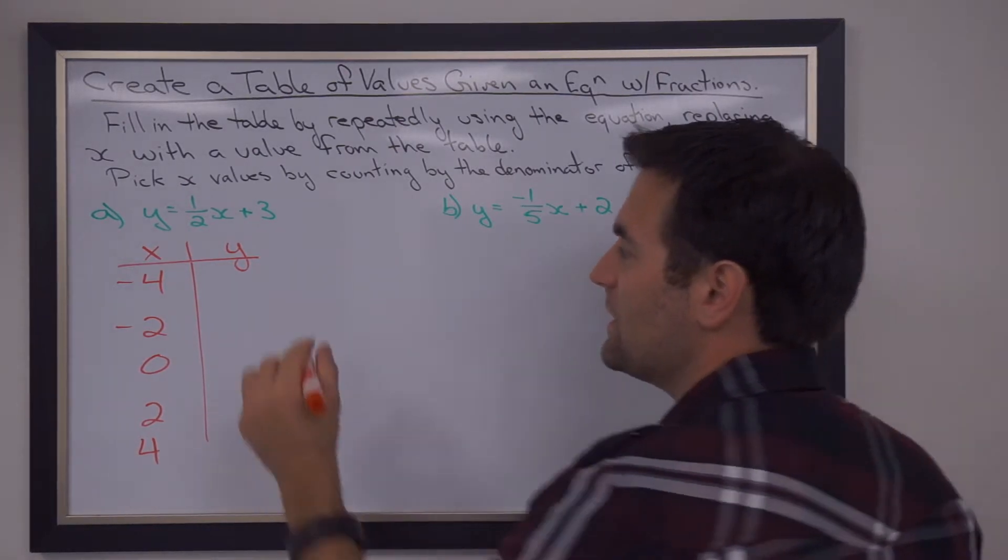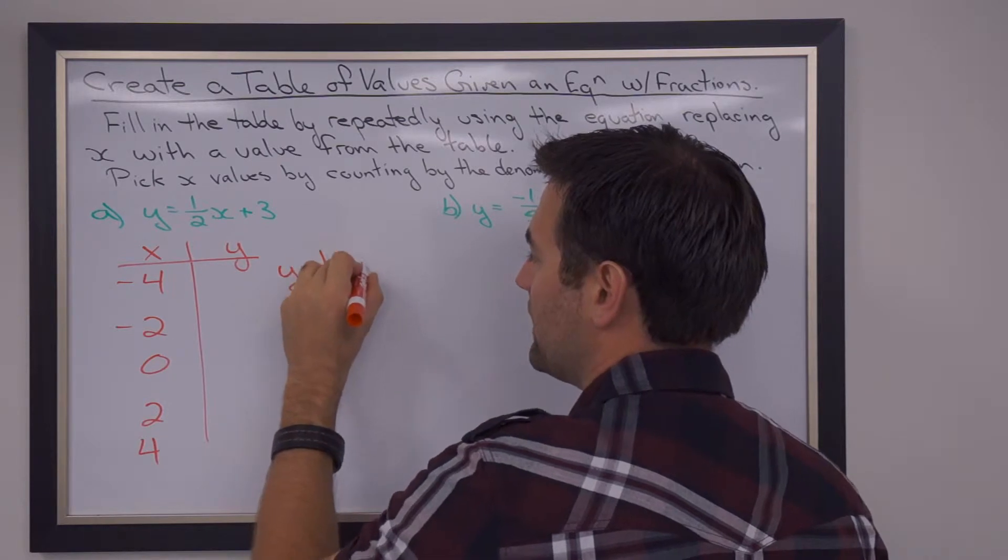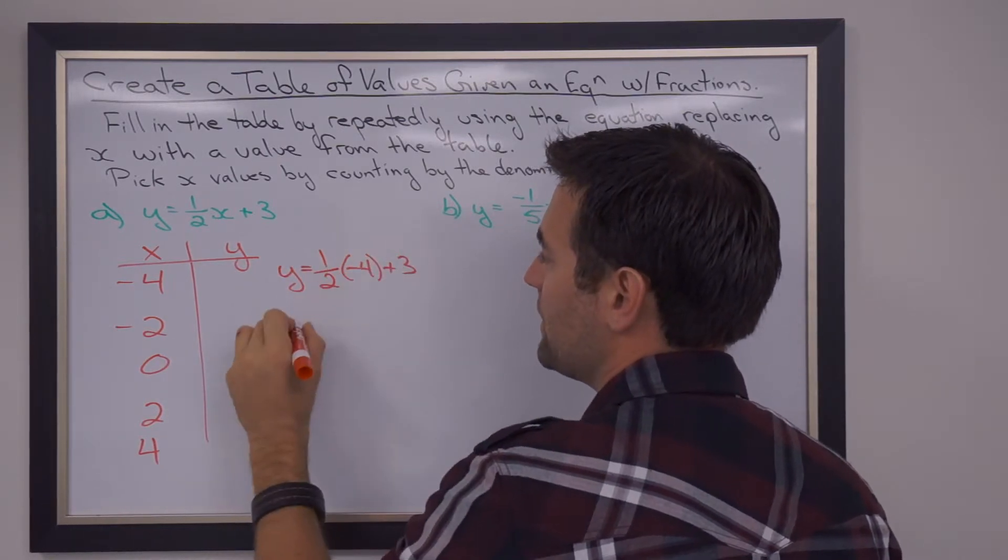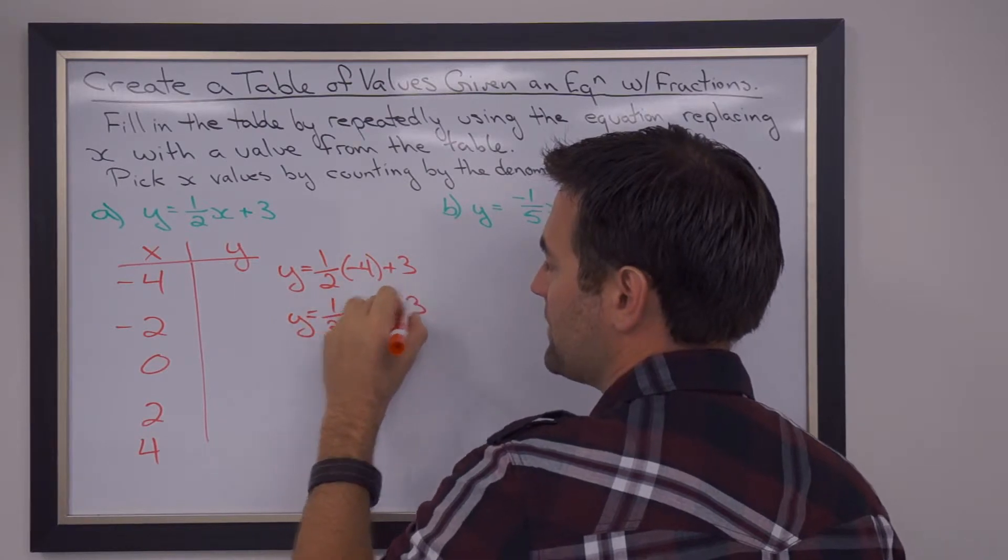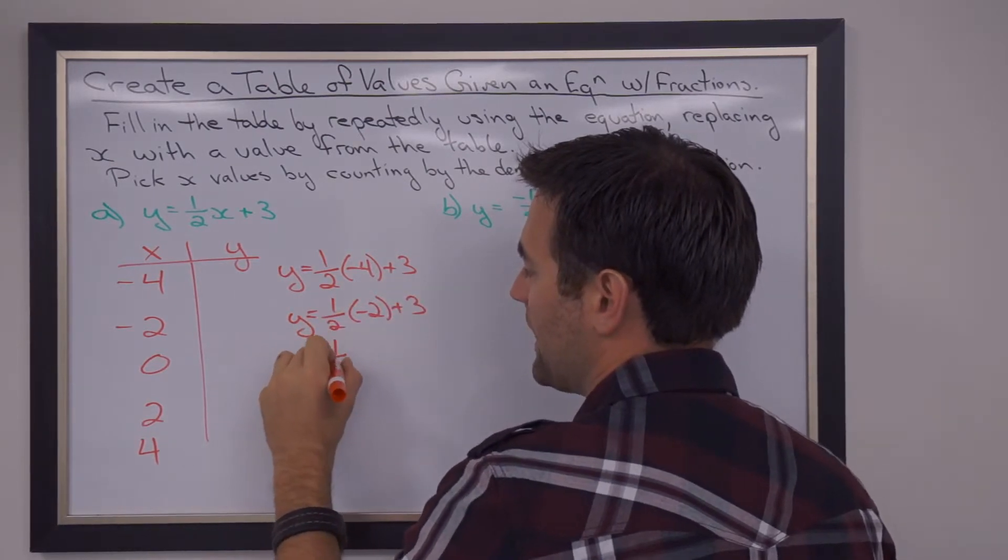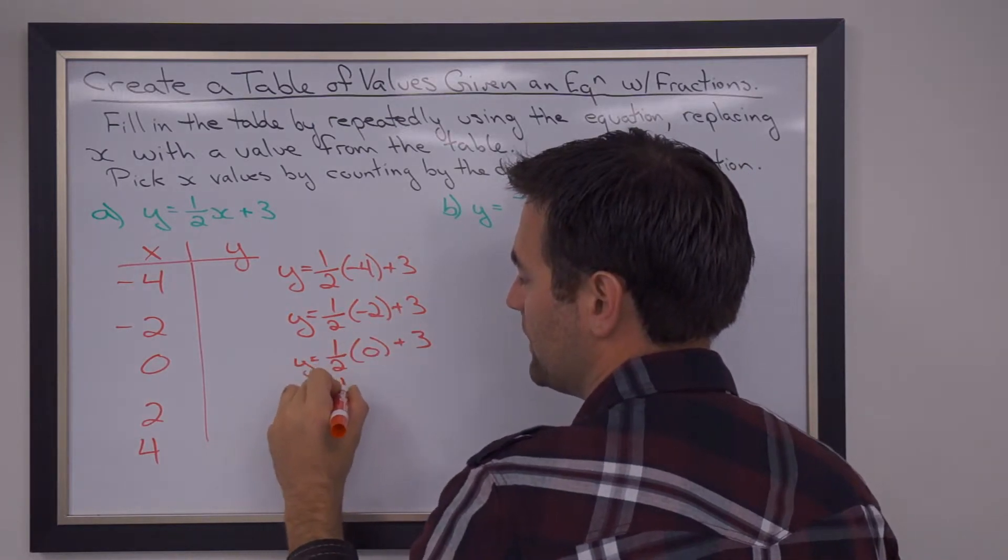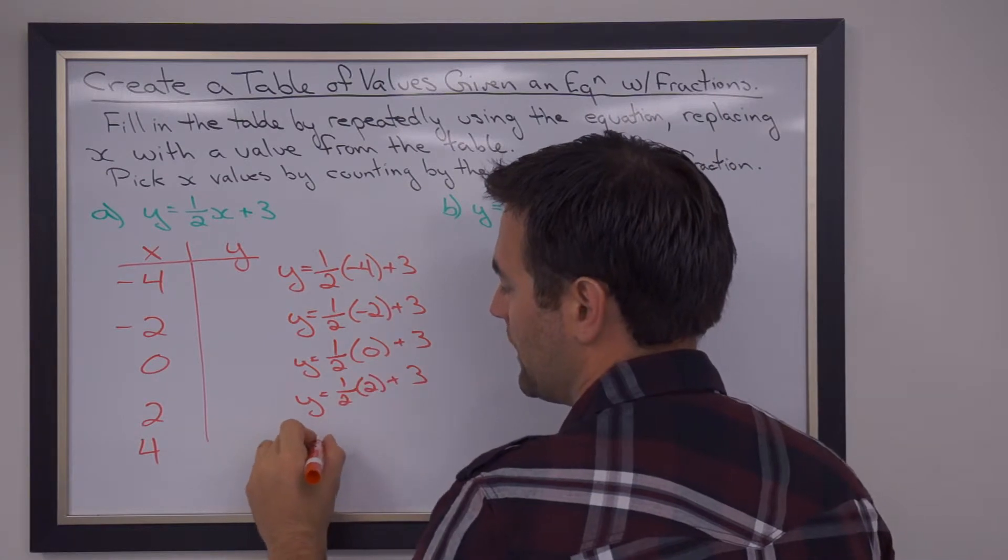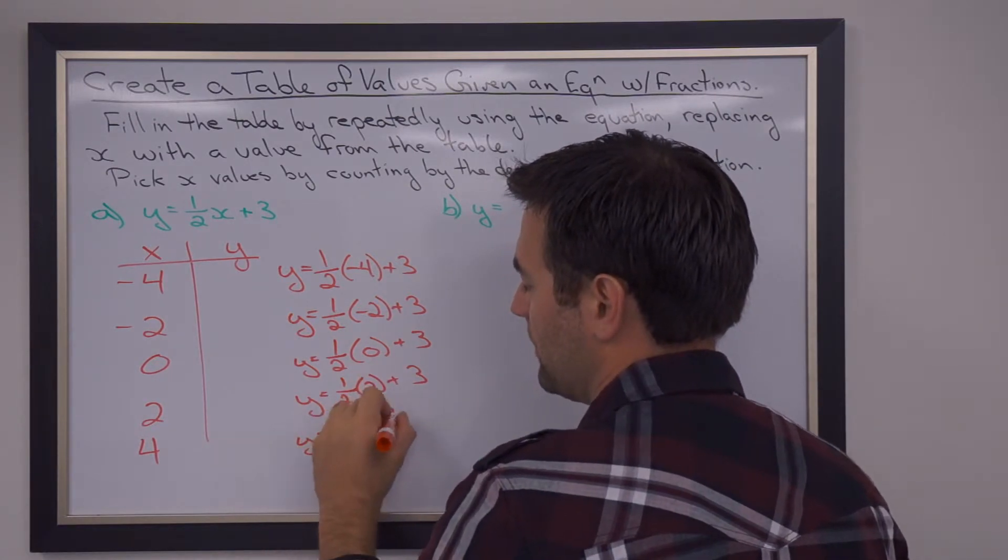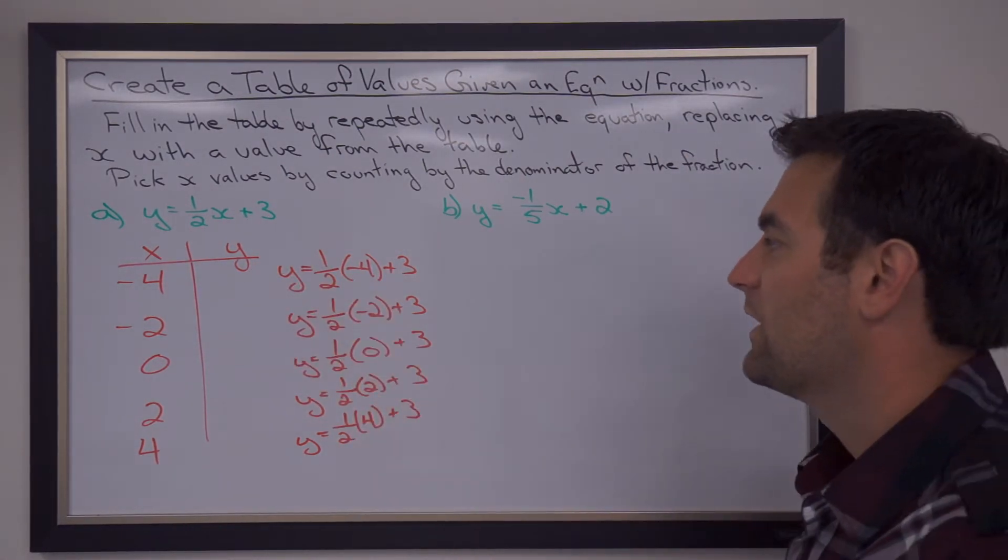So now calculating these is done the exact same way. y equals one-half negative four plus three, y equals one-half negative two plus three, y equals one-half zero plus three, y equals one-half two plus three, and y equals one-half four plus three.